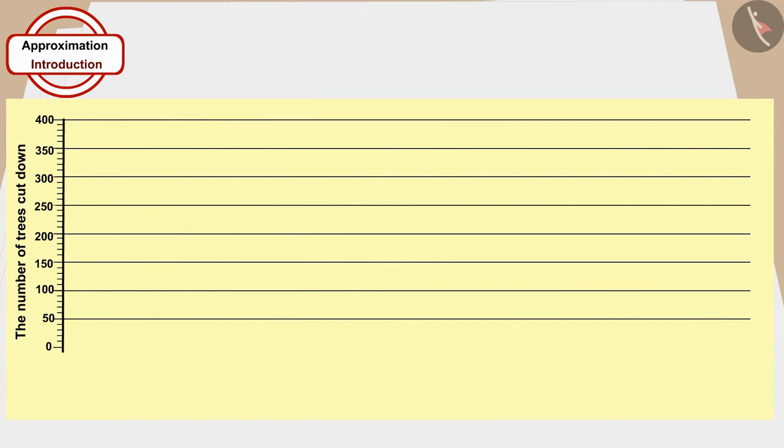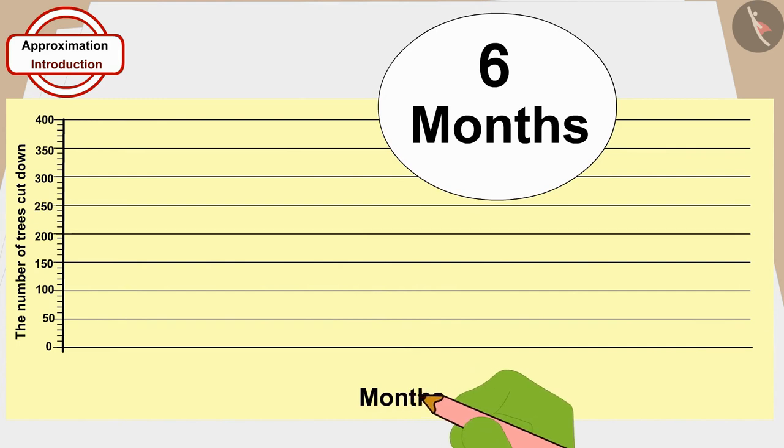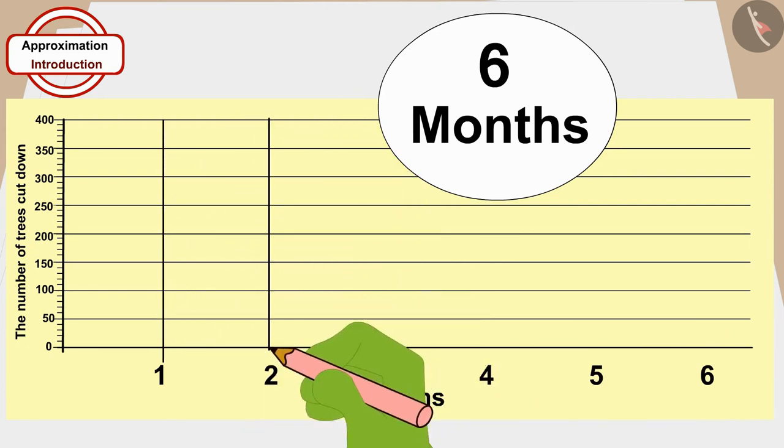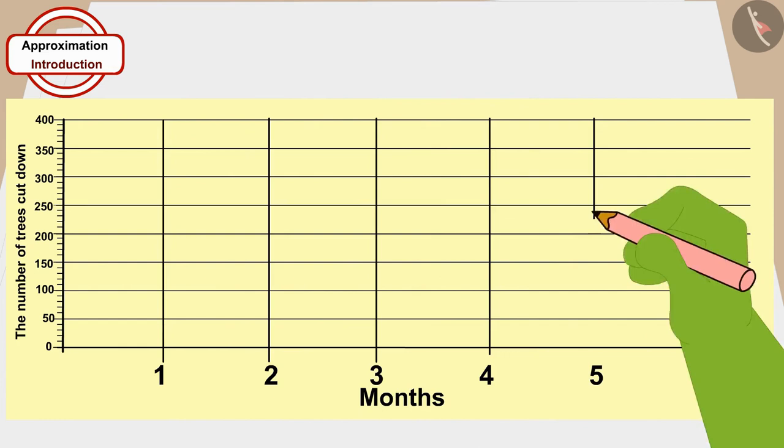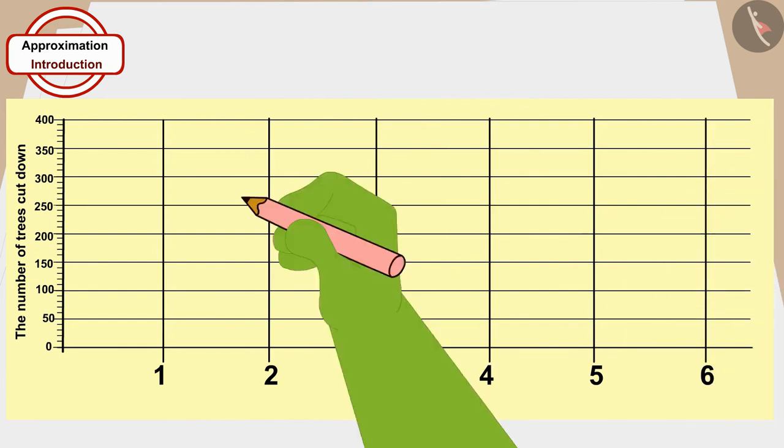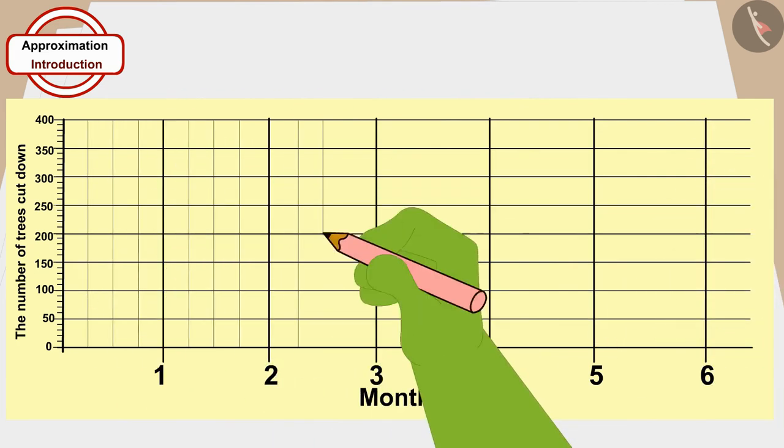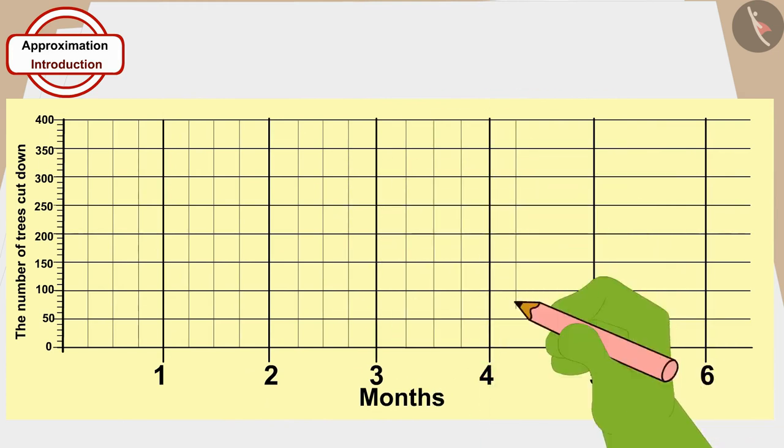Now, at the horizontal line drawn at 0, he drew vertical lines at equal distance numbered 1, 2, 3, 4, 5, 6 because he was going to count the number of trees that had been cut every month for 6 months. And finally, he drew three vertical lines at equal distance between the numbered vertical lines.